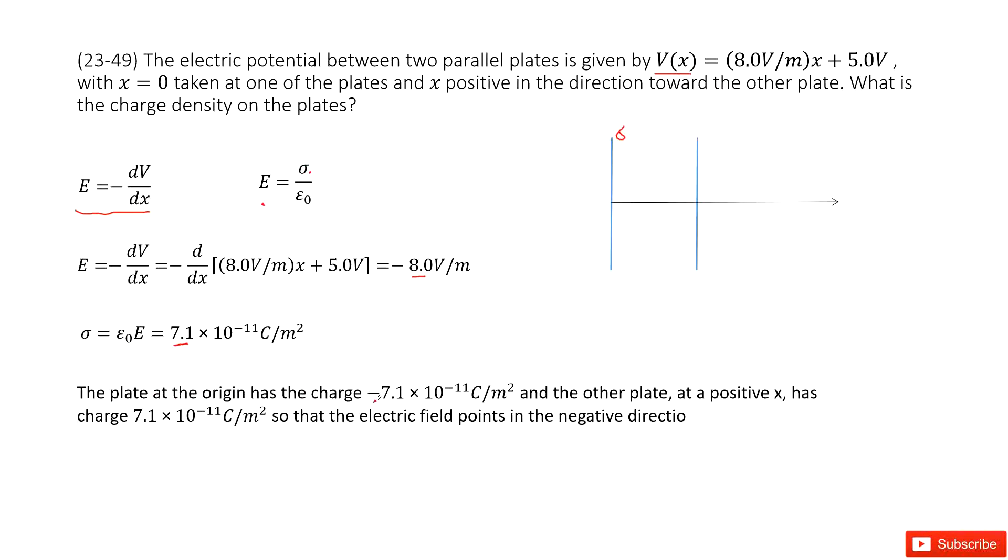The plate at the origin has the charge -7.1 × 10⁻¹¹ C/m², and the other plate has charge 7.1 × 10⁻¹¹ C/m². Thank you.